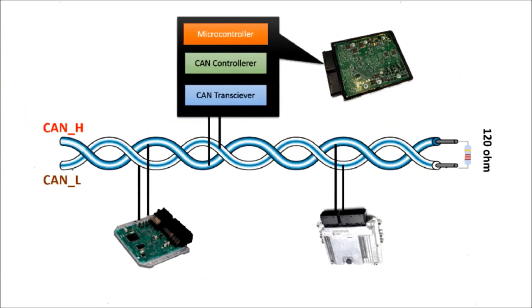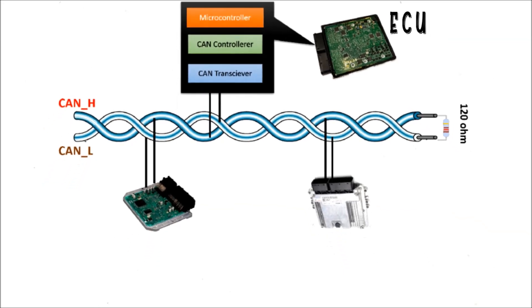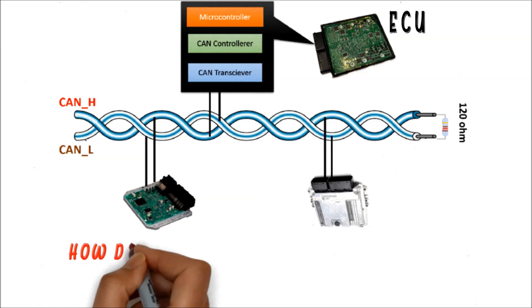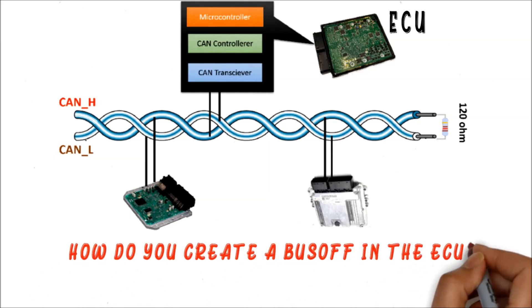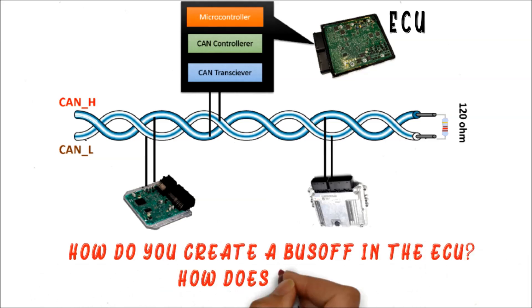See this ECU CAN network — let us say you are testing the ECU. Now, if you want to create a bus-off scenario, then how would you do it and how does it work? Please explain.